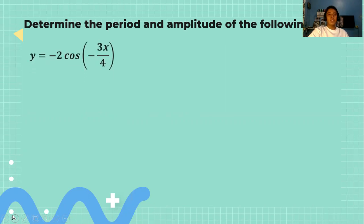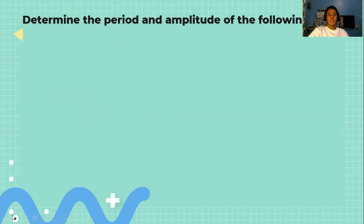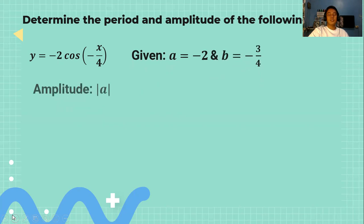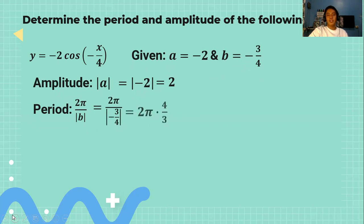Next: y = -2cos(-3x/4). The amplitude is 2 and the period is 8π/3. With a = -2 and b = -3/4, the amplitude is |-2| = 2. For the period, we have 2π / |-3/4| — taking the reciprocal of 3/4 gives 4/3, which is already positive, so 2π × (4/3) = 8π/3.